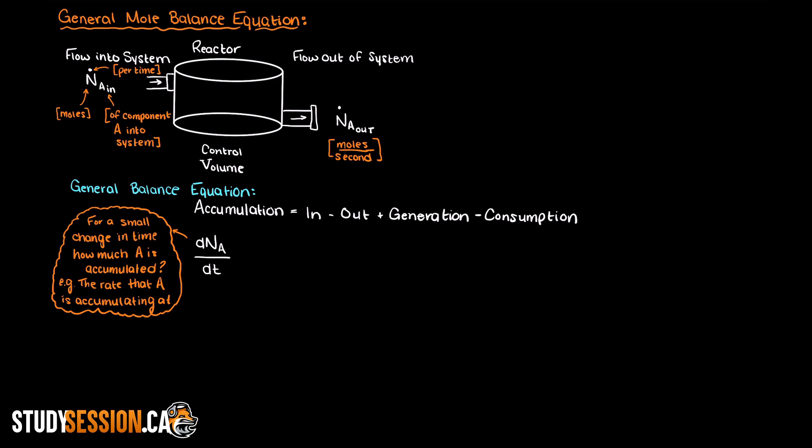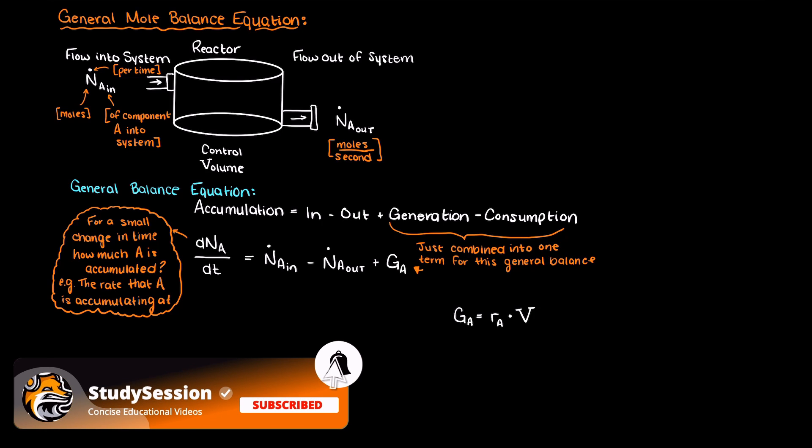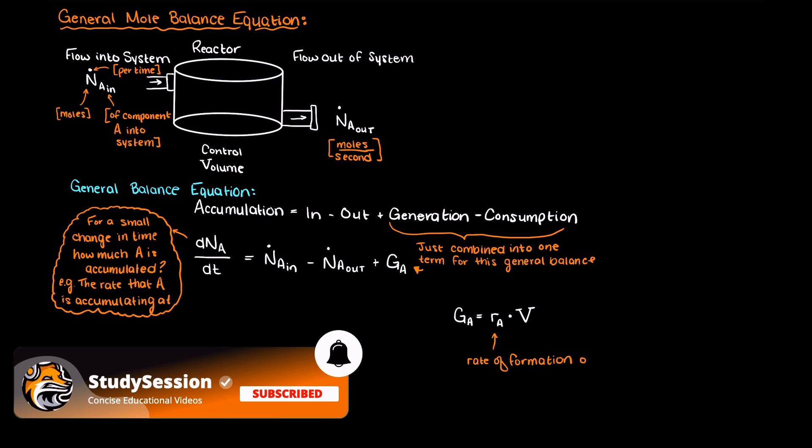Let's assign some variables to these terms. The only term that we don't really know much about at this point is the generation and consumption term. As this course is reaction engineering, it should be apparent that this term is going to play a relatively important role when we get into performing balances on various reactors. Commonly we write out this generation term as the rate of formation of our species of interest, so species A, times the volume of our reactor system.